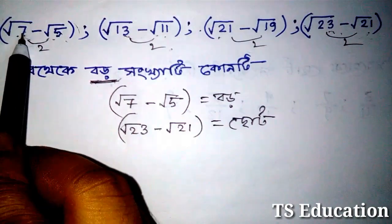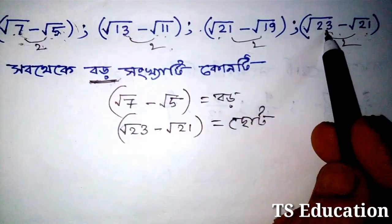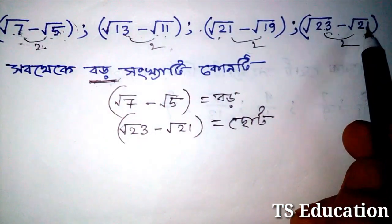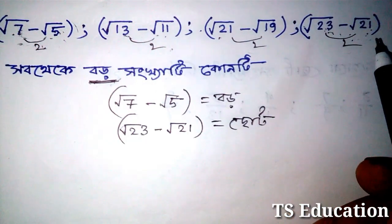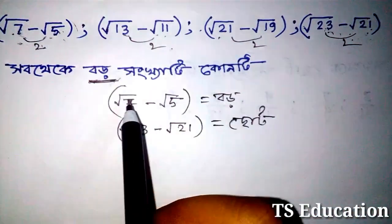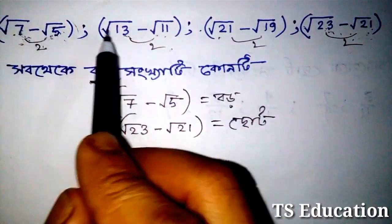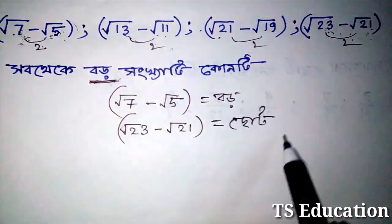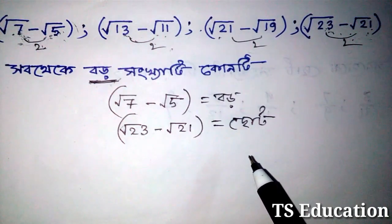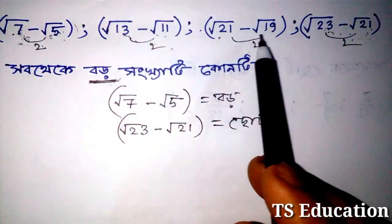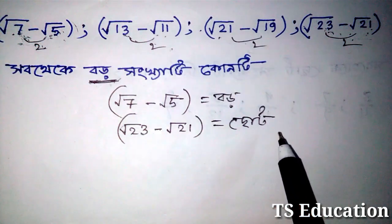1, 1, 2 — the difference remains the same. We see root type 23 minus root 21.